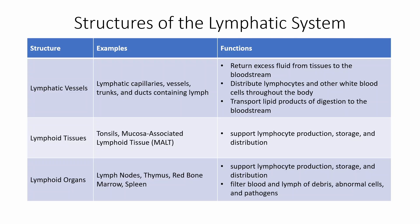Lymphoid tissues include things like your tonsils as well as mucosa-associated lymphoid tissue, or MALT. This supports lymphocyte production, storage, and distribution. Lymphoid organs like the nodes, the thymus, the red bone marrow, and the spleen also support lymphocyte production, storage, and distribution, but they additionally work on filtering blood and lymph for anything that's not supposed to be there — debris, pathogens, and cells that have become abnormal or gone haywire.